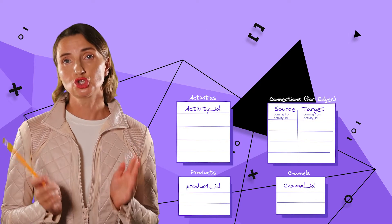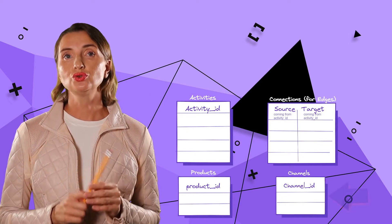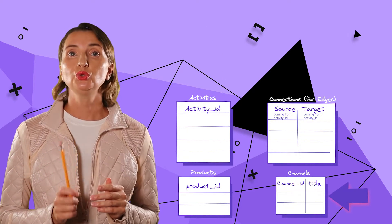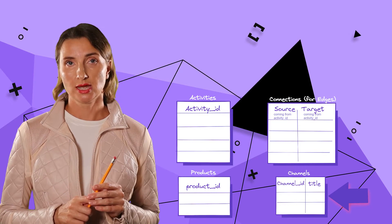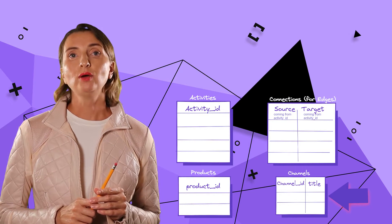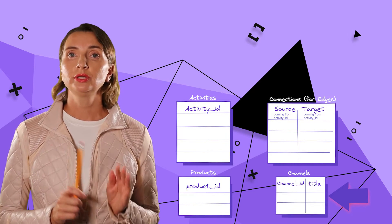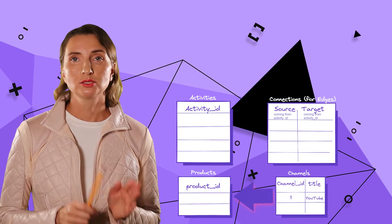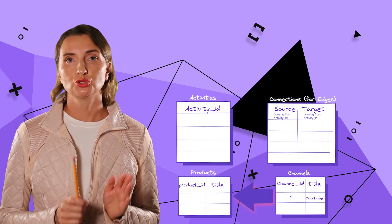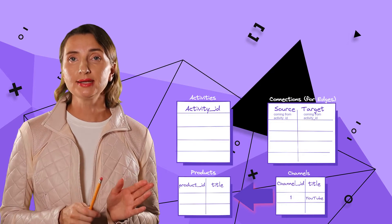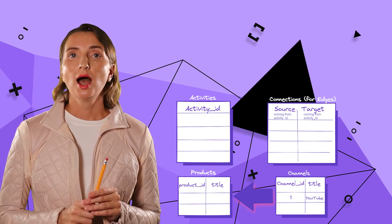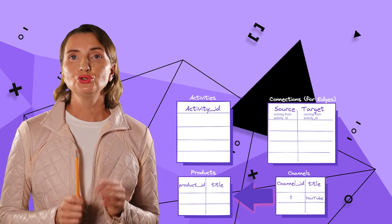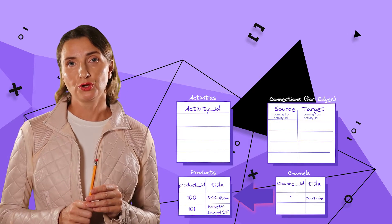Let's review the column list for every table. Table channels: two columns — unique channel ID and title. I will add only one channel for now. Table products: two columns — unique product ID and title. I will add two products for now.